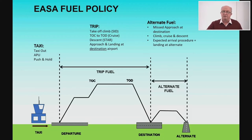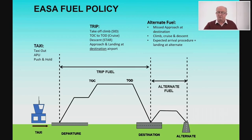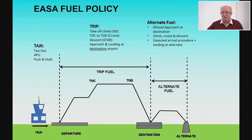Then you have the alternate fuel — for when you can't land at your destination. Alternate fuel includes the missed approach at the destination, then the climb, cruise, and descent to the alternate — again typically via SID and STAR, not just a straight direct routing. It's a mini sortie in itself, ending with the expected arrival procedure and landing at the alternate. Note that the missed approach is not included in the trip fuel, so if a question has no alternate, remember to add the missed approach fuel separately.